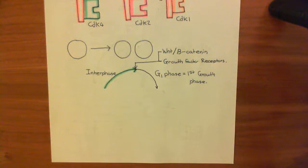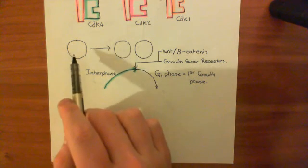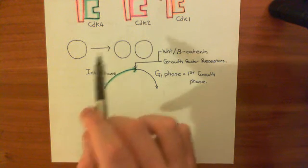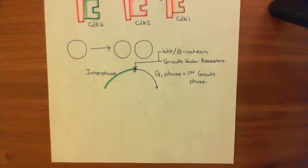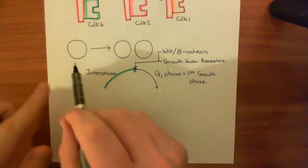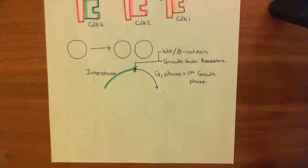In addition, you're going to have to start making the proteins associated with DNA replication. In order to divide, you must copy all of the genomic information so that each new cell will have a copy. In G1 phase, you get ready to begin the replication of the genetic material.